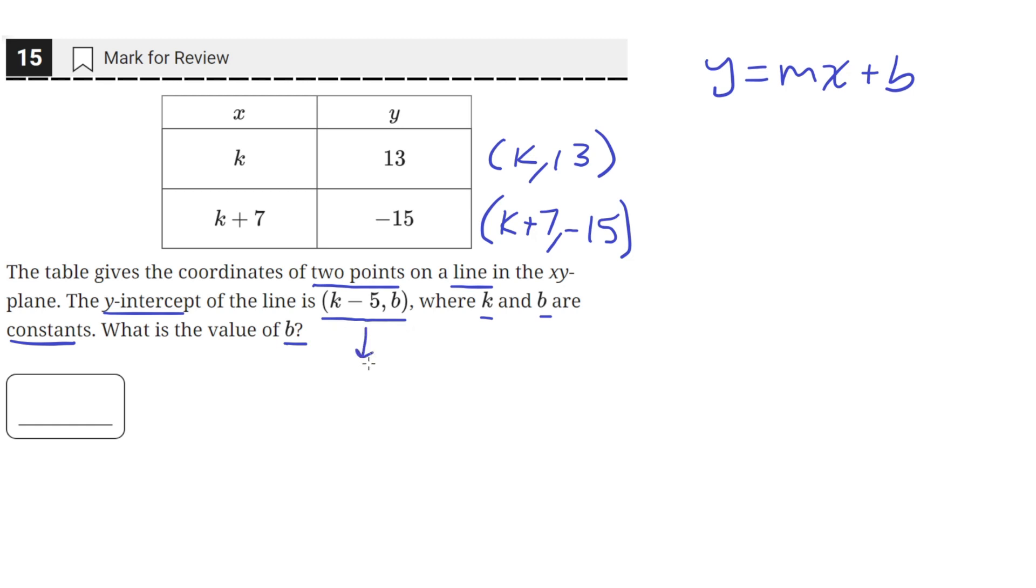So, since the y-intercept is at (k-5, b), and we know that at the y-intercept, the value of x, the x-coordinate, is always 0. So k-5 has to equal 0, which means that k equals 5.